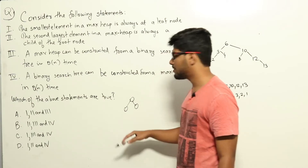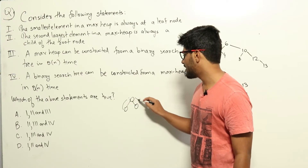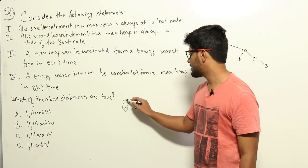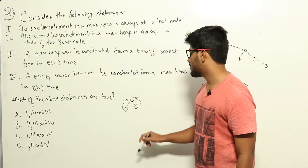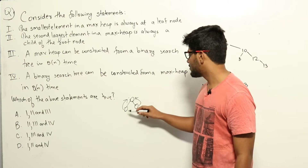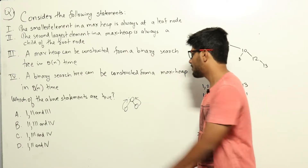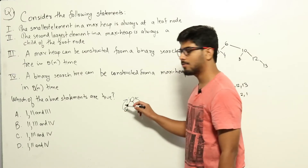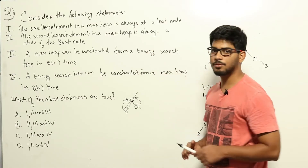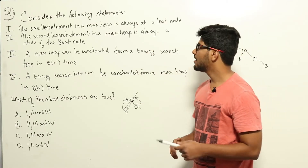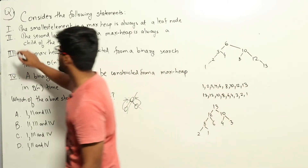If the smallest element is at an internal node, it will have children. To satisfy the max heap property, this node has to be greater than both its children. But we know this is already the smallest element, so we can't find two elements smaller than this to make its children. So this is never possible — the smallest element always has to be at a leaf node. Statement 1 is correct.